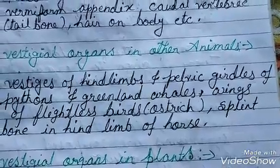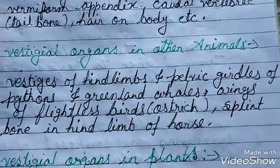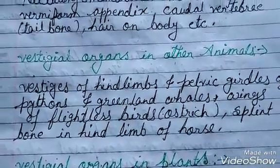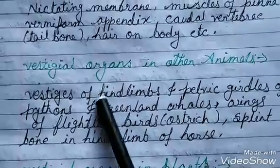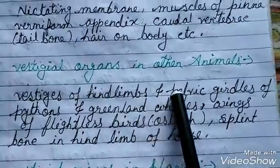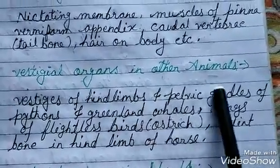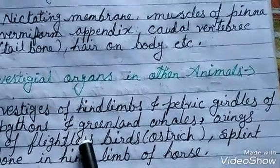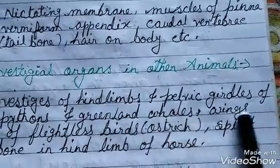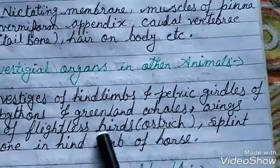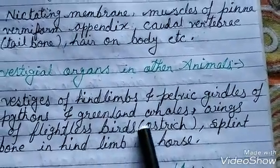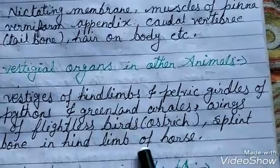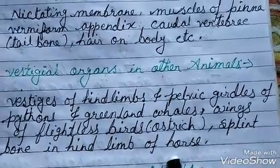Some examples of vestigial organs in other animals include vestiges of hind limbs and pelvic girdle in python and Greenland whale, wings of flightless birds like ostrich, and splint bone in the hind limb of horse.